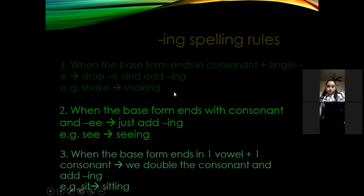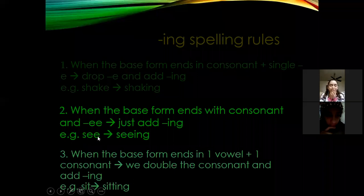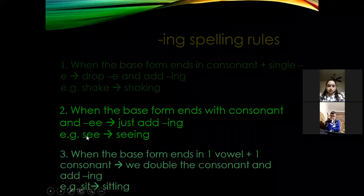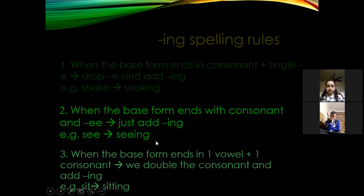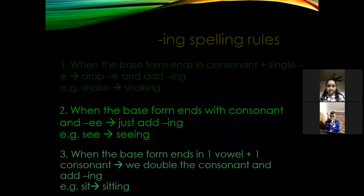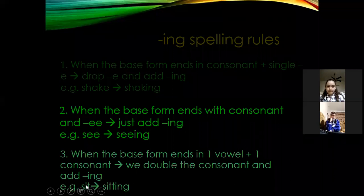The second rule: look at 'see' → 'seeing.' I did not drop the 'e' because there are double e's. The rule is: when the base form ends with a consonant and double 'e,' just add -ing without removing any letter. The third rule: when the base form ends in one vowel plus one consonant, double the consonant and add -ing. For example, 'set' — one vowel plus one consonant — double the 't' and add -ing: 'setting.'